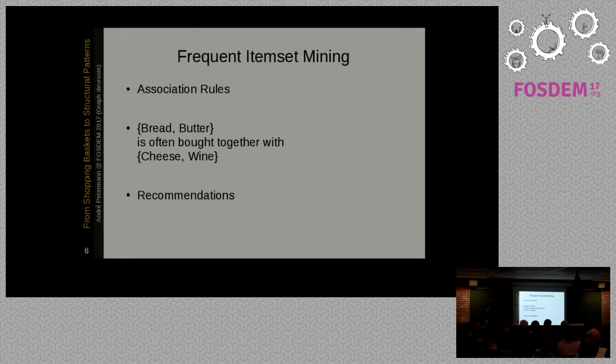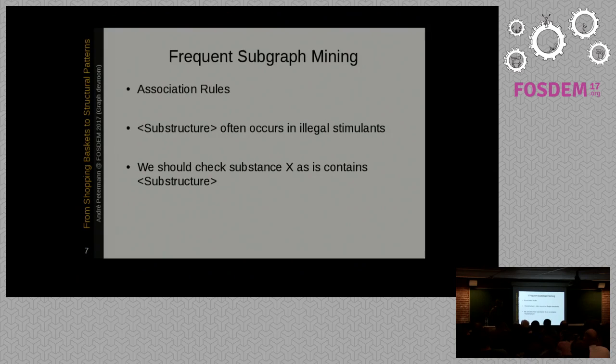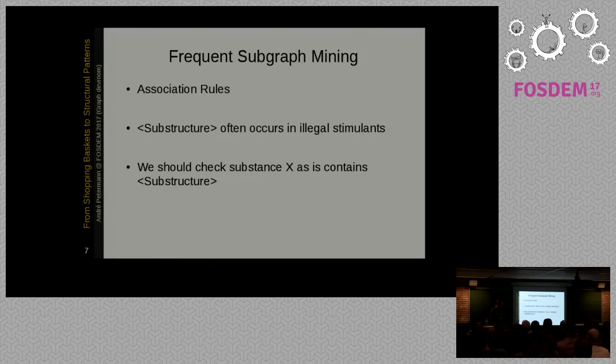Let's first go back to the simplest variation of this problem. Some of you might know association rules. This is something like people who brought bread and butter often bought cheese and wine. We can use this for recommendations. That's what some webshops do. For example, if you already added two items to your shopping basket on Amazon, then one way to recommend you other things is using association rules, which are based on the results of frequent pattern mining on past data sets. In the frequent subgraph mining, we can use it for similar things. For example, if we know that a substructure often occurs in illegal stimulants and we have an unknown chemical substance which contains a substructure which is known to be often part of illegal stimulants, we can have a look on this substance if maybe it's a candidate for a new illegal stimulant. I hope you got the idea.